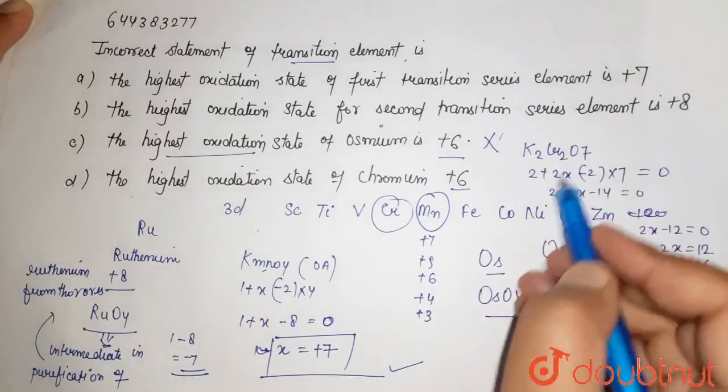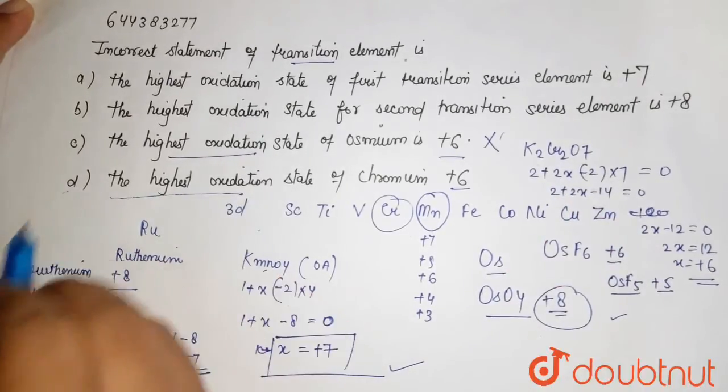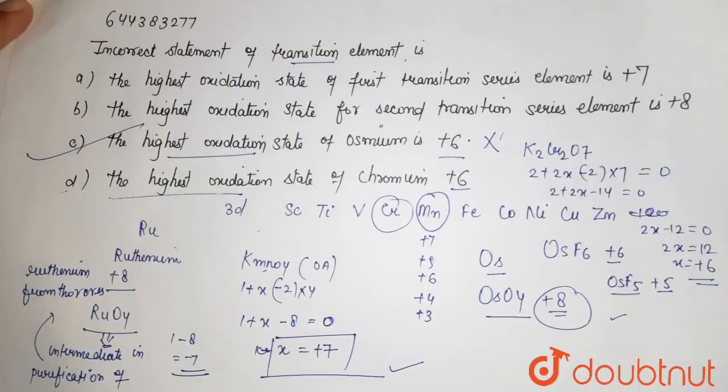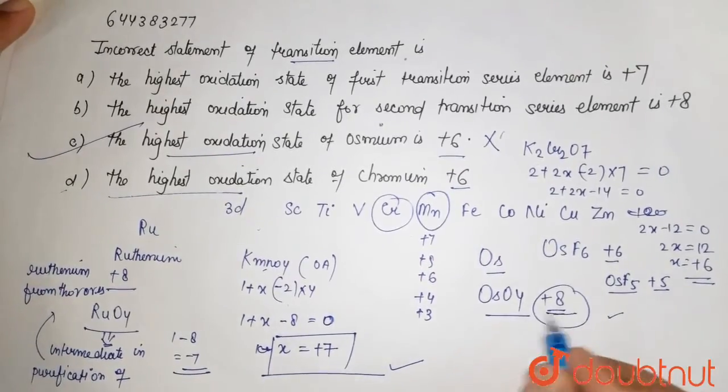So this is also correct. We are left with option C - the highest oxidation state of osmium is not +6, it is +8, which is shown